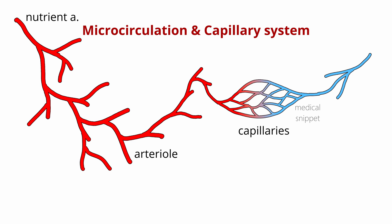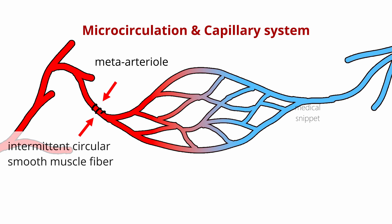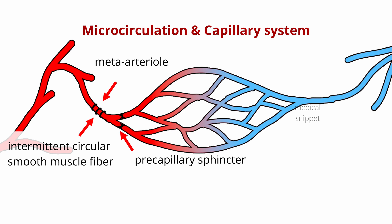The branch of the arteriole which connects directly with capillary is called a meta-arteriole. Meta-arterioles are different from the arterioles. In meta-arterioles, the smooth muscle coat is not continuous as in arterioles; it circles the meta-arterioles at intermittent points. At the point where capillaries arise from the meta-arteriole, there is smooth muscle fiber encircling it to form a pre-capillary sphincter. This pre-capillary sphincter opens and closes to regulate the blood flow into the capillaries according to the local condition of the tissue.